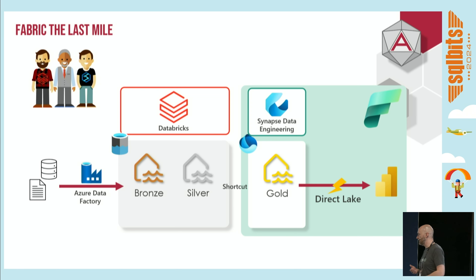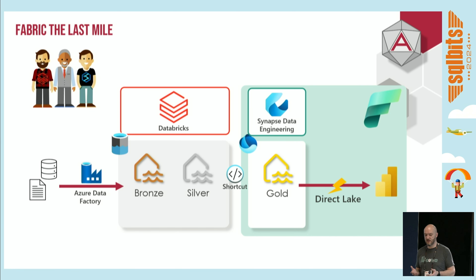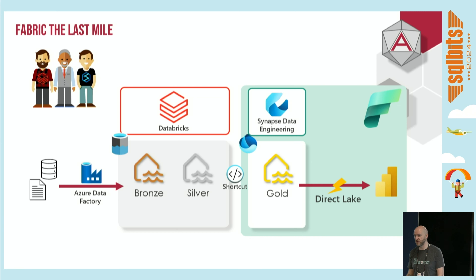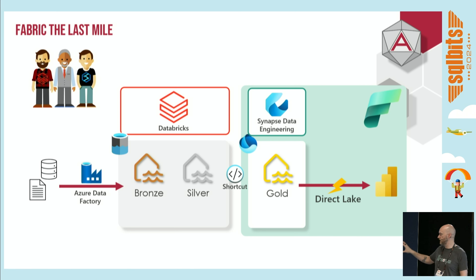Another architecture we're talking to customers about recently is Fabric for the last mile. Where you've got organizations that already have an established lake house architecture - already using Databricks and ADLS Gen 2 with everything stored there - but you want to take advantage of that fast connectivity between your gold layer and Power BI. This involves shortcutting that silver layer into Fabric One Lake, then doing that last step of curating your data within Fabric. Microsoft are leaning quite a lot into this - the ability to say you don't need to migrate everything to Fabric, let's just connect everything up. It will slowly start to build everything into Fabric and you'll start using it more.